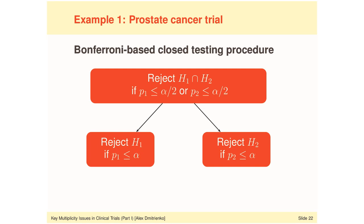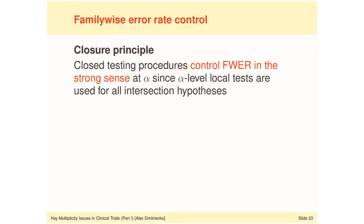We have now defined the local tests for all intersections within the closed family. Before explaining how this Bonferroni-based closed testing procedure actually works, let me state the most important property of any closed testing procedure. By the closure principle, any closed testing procedure controls the family-wise error rate in the strong sense at the predefined alpha level applied within each intersection hypothesis. This is a fundamental property which explains why closed testing procedures have attracted so much attention in clinical trial applications.